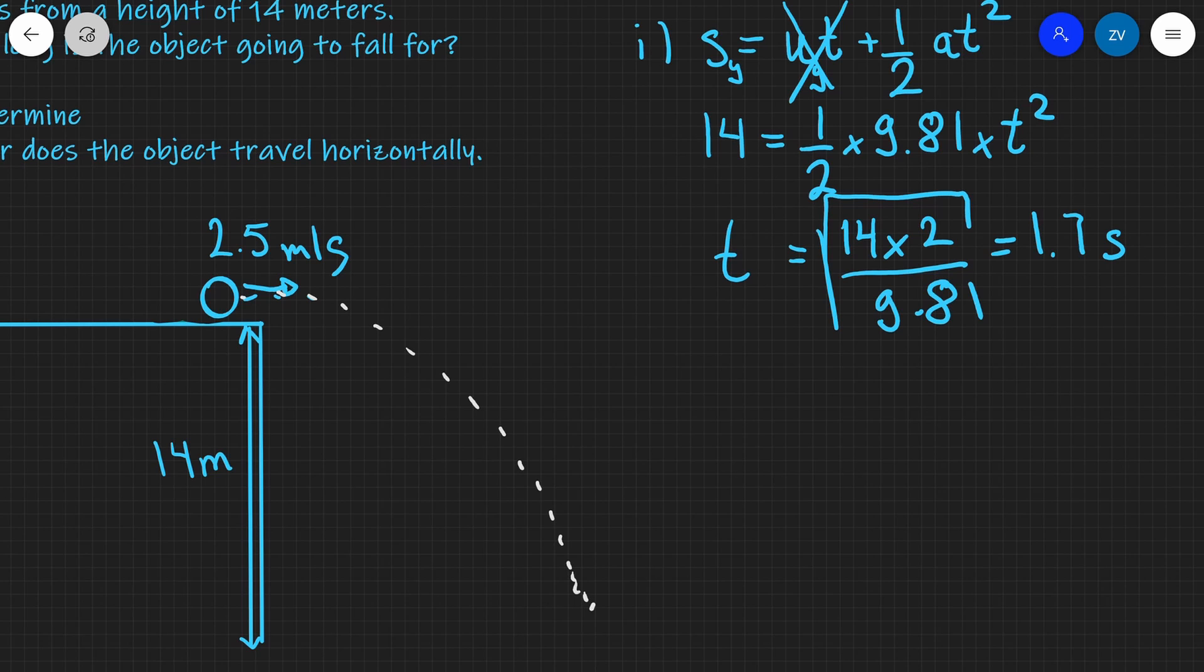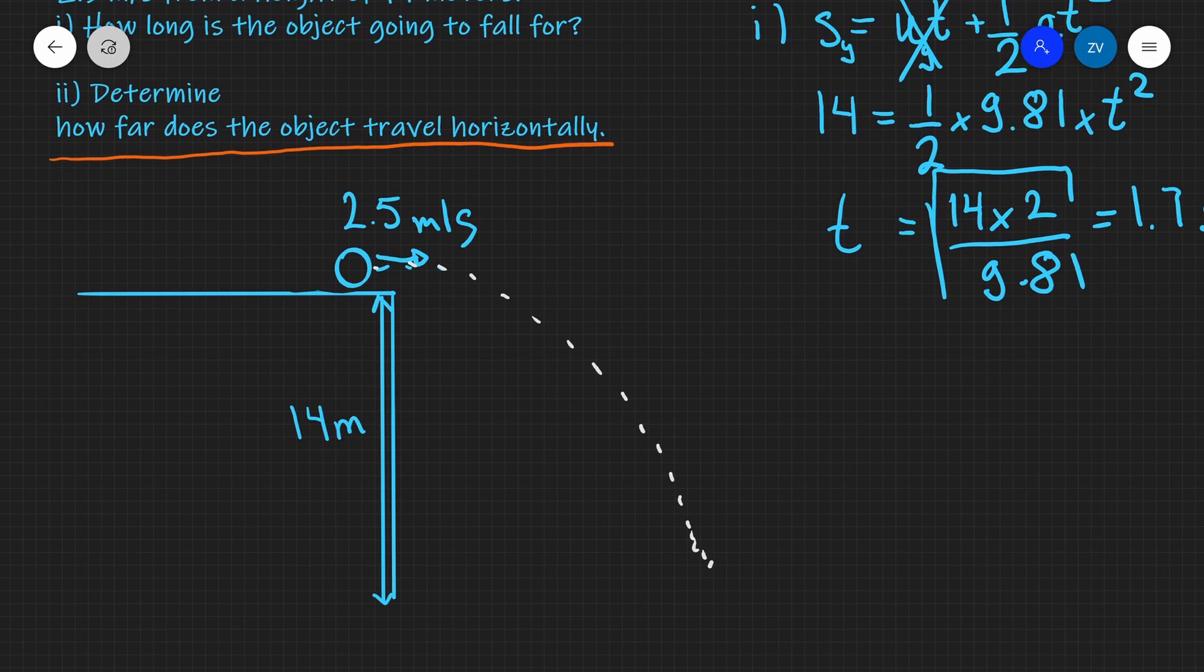So our object is going to be in the air for 1.7 seconds. So let's work out the second part of the question which is to determine how far does the object travel horizontally. In other words what is this distance here going to be?